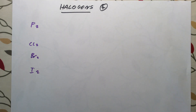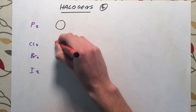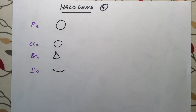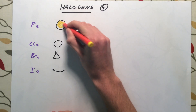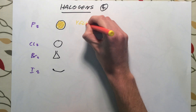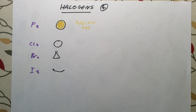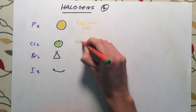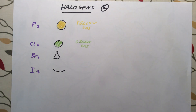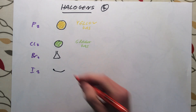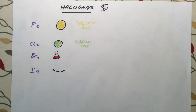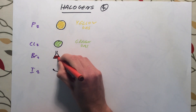The first thing we need to know about the halogens is their appearance. Fluorine is a very pale yellowy gas. Chlorine is a very pale green gas. Bromine is one of only two elements that is actually a liquid at room temperature — it is a dark red or brown liquid, and it evaporates very easily, turning into a brown gas when heated.